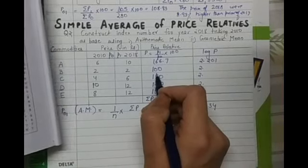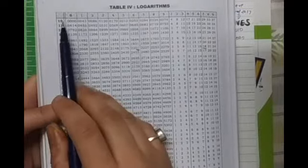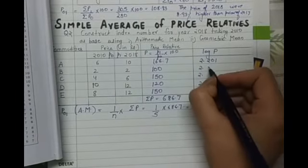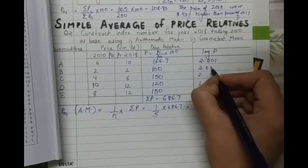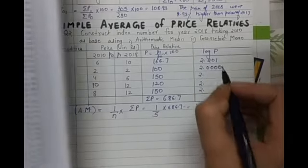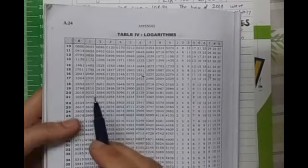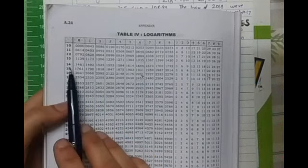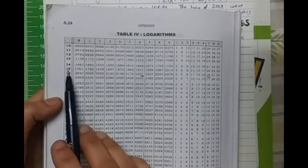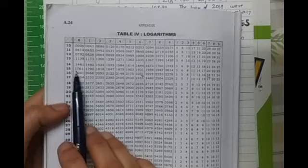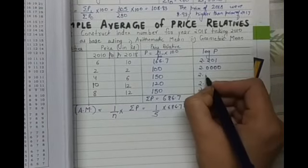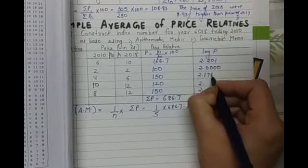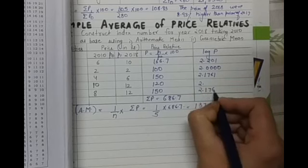For 100, we will look into the log table, 10, 0. So the log value will be 2.0000. For 150, we will look into the log table, it is 15, 0, 1761. So we will write 1761 here and 1761 here.